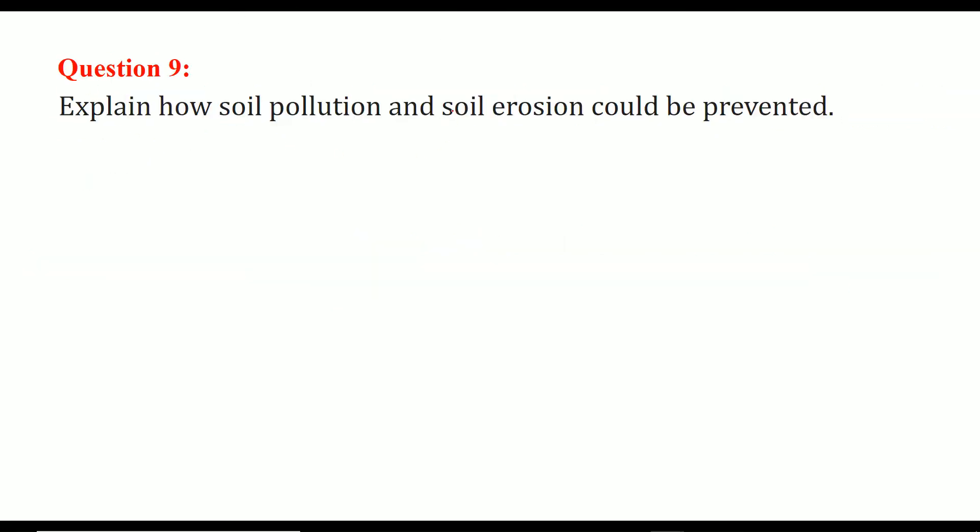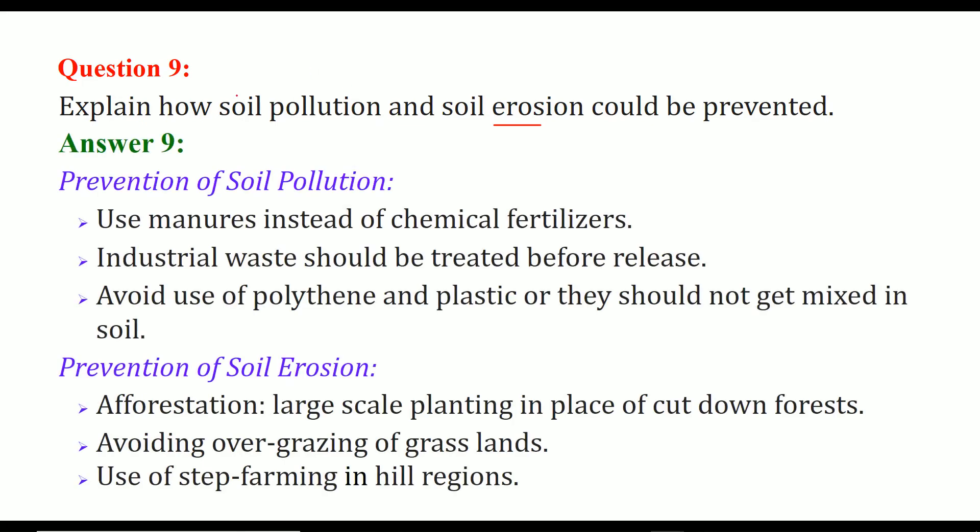Explain how soil pollution and soil erosion could be prevented. Most important is that we need to have plants. So if we need to prevent the soil pollution we can use the manures instead of using the harmful chemical fertilizers and all the industrial waste has to be treated, their acids have to be neutralized before we can even release it to any water or any other place. We have to avoid the polyethylene plastic because they are non-biodegradable. So they should not get mixed in soil.